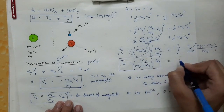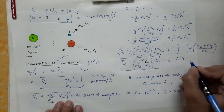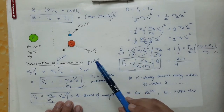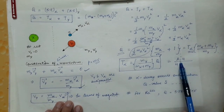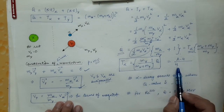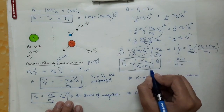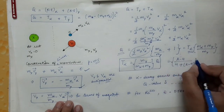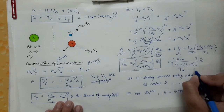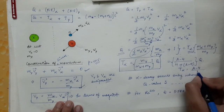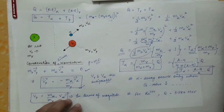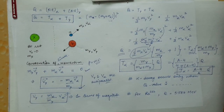Substituting mass numbers: the mass of the daughter nucleus is (A − 4) and the mass of the alpha particle is 4. So T_alpha = (A − 4) / (4 + A − 4) × Q = (A − 4) / A × Q. This is the final expression relating the kinetic energy of the alpha particle to the Q value of the alpha decay process.